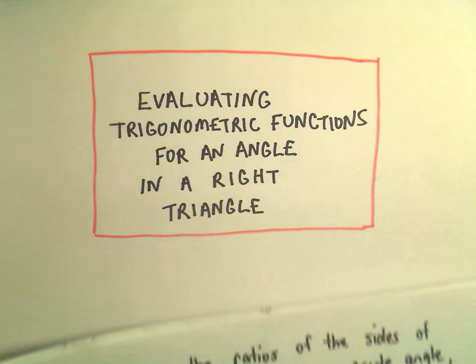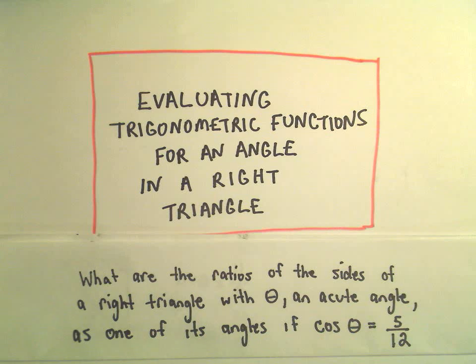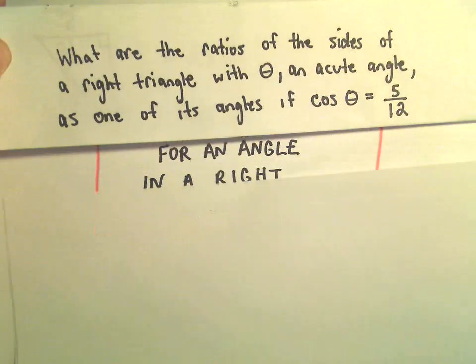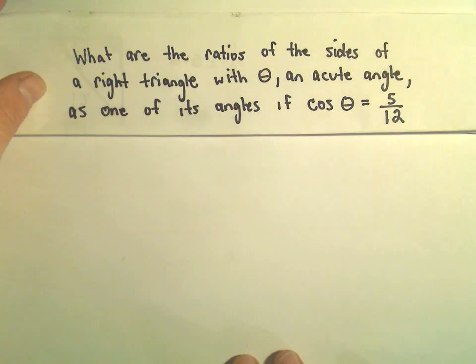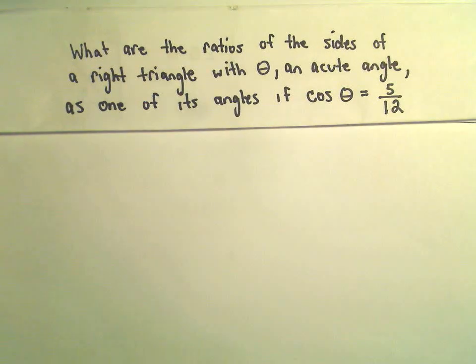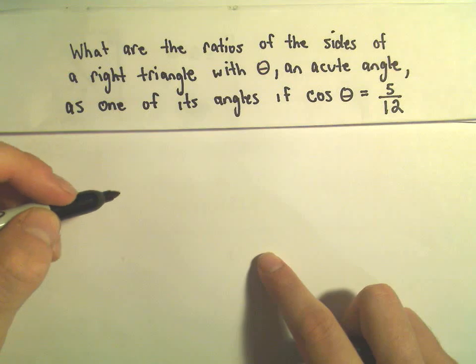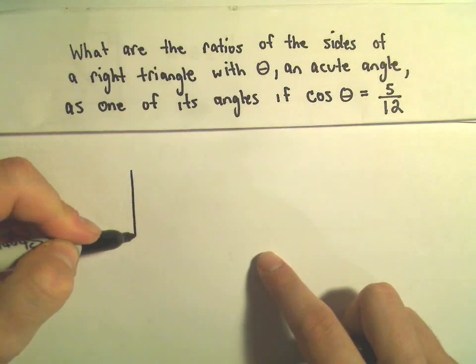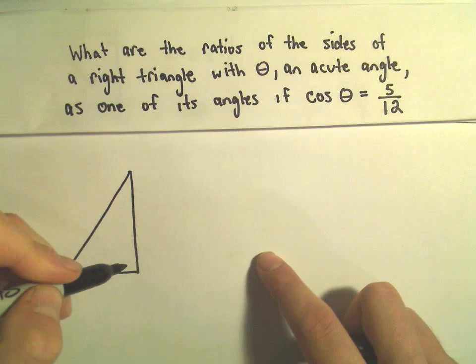In this video we're going to do an example of finding the values for the other trig functions if we're given a right triangle and we know one of the trig functions, the value of one of the trig functions already.